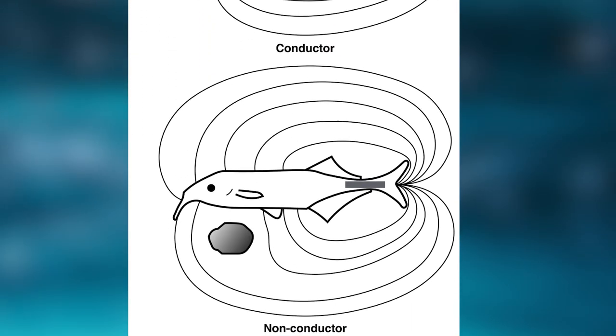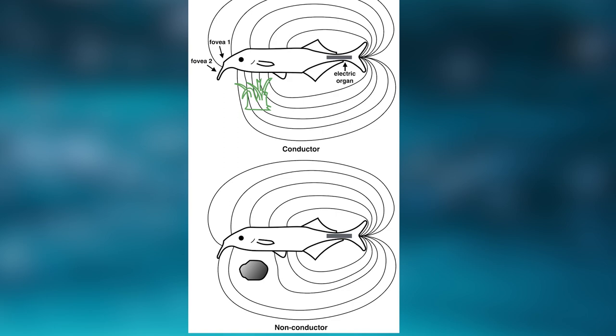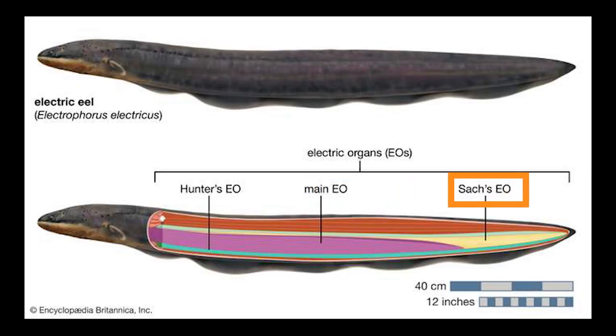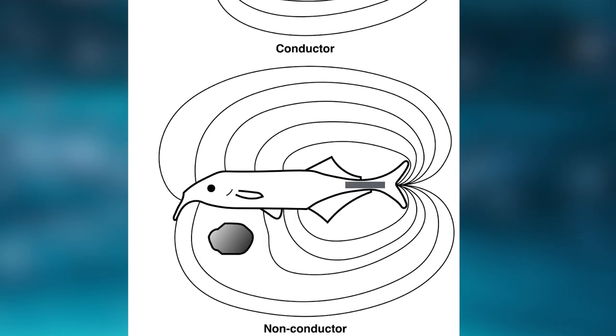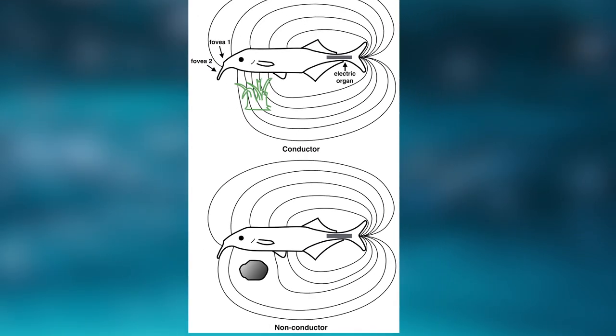Electrolocation is also a fascinating aspect of strong and weakly electric fish. The Satch's organ is used for this purpose. The elephant nose, for example, uses electric organ discharges to locate objects. First, it sends out these signals using the electric organ.